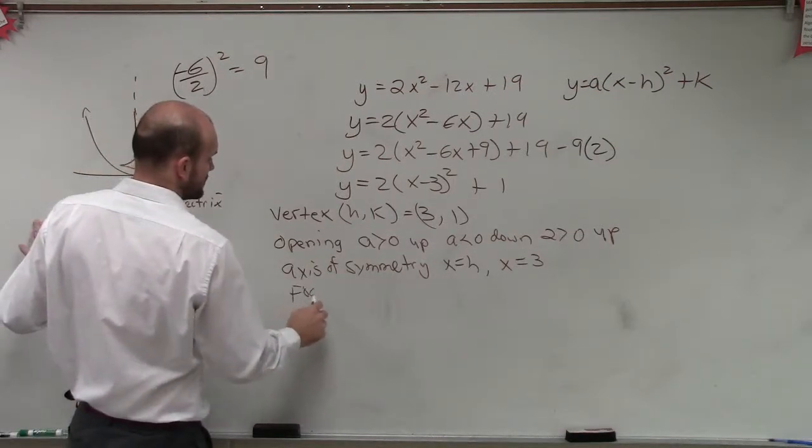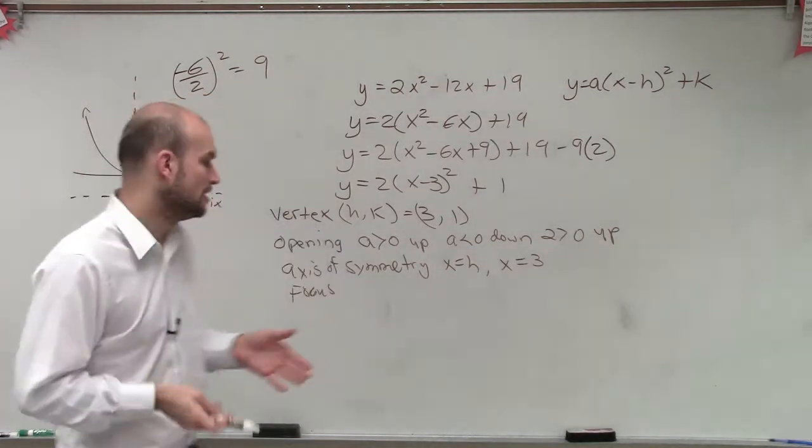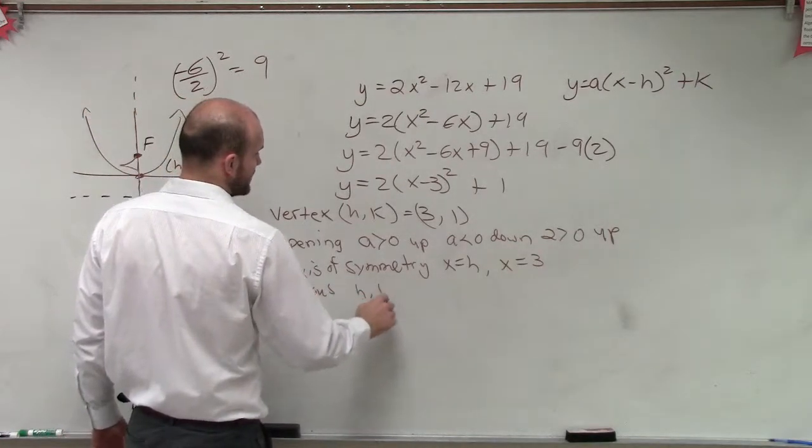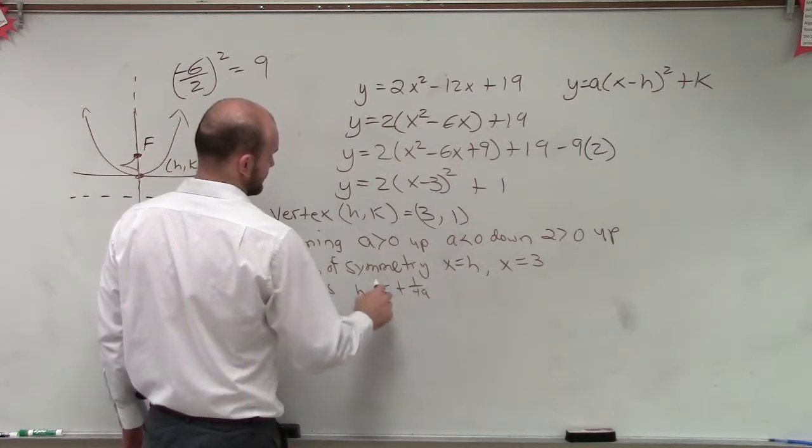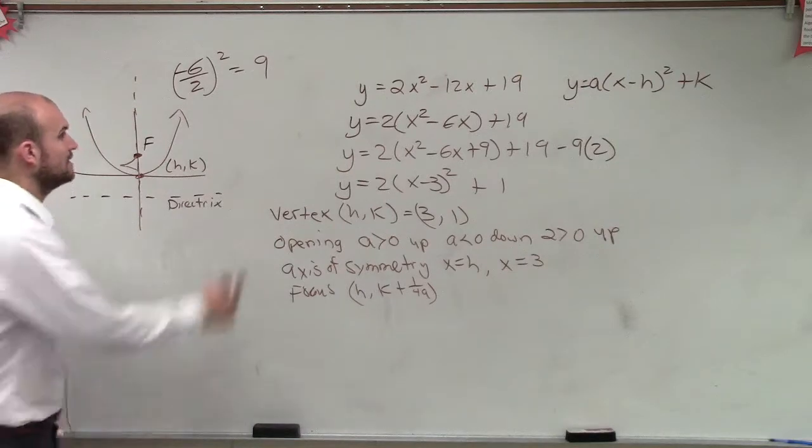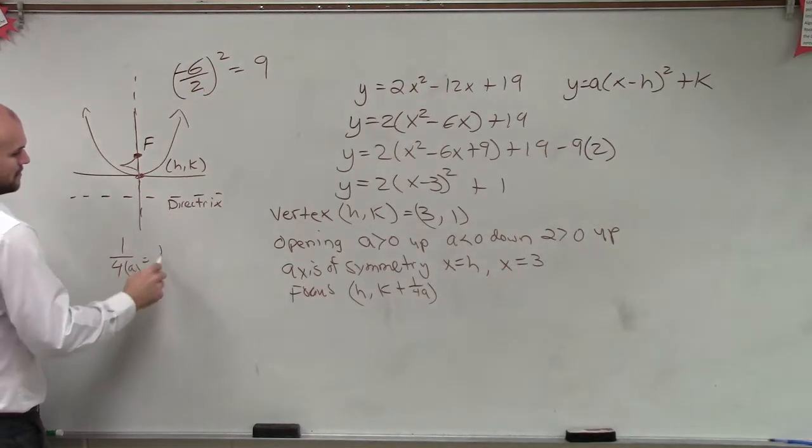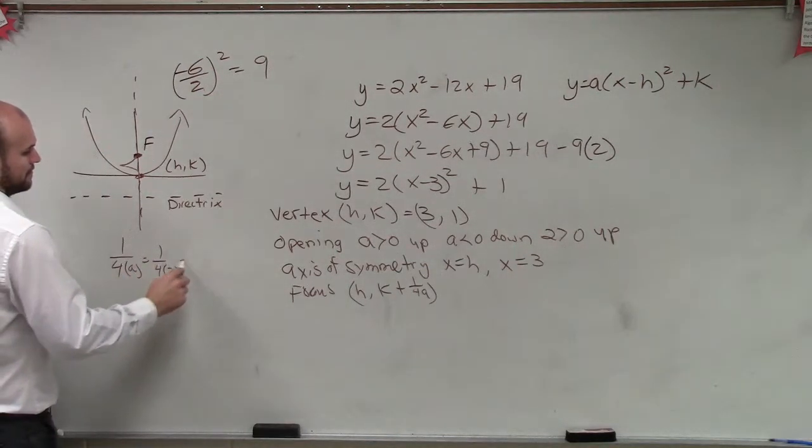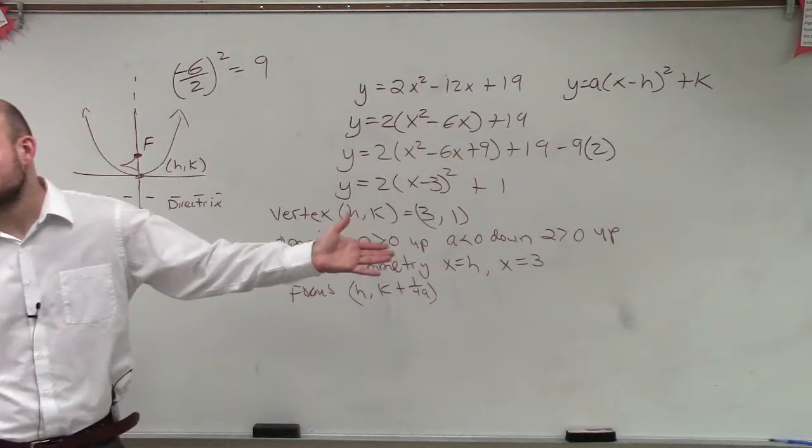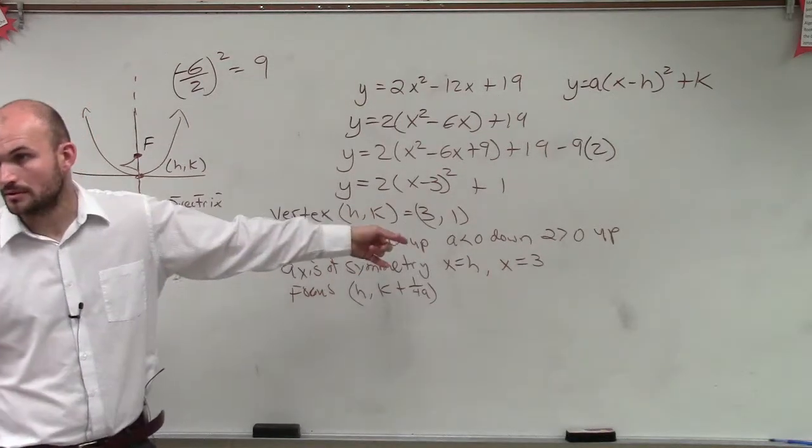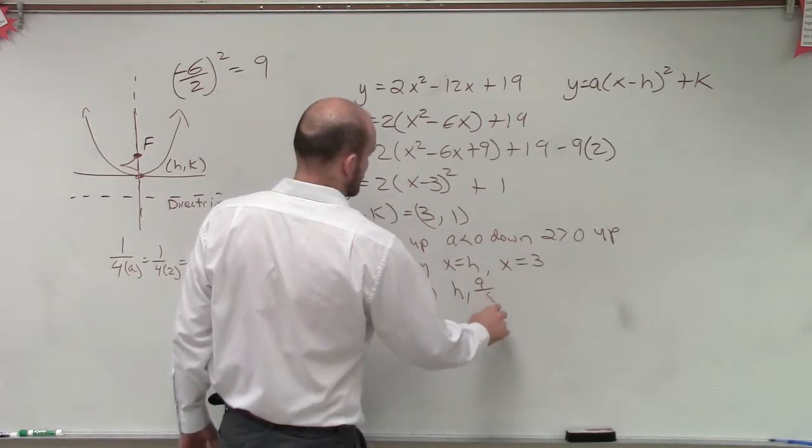So our focus, when we have a horizontal asymmetry, which is vertical, our focus is going to be h comma k plus 1 over 4a. Well, we know 1 over 4a, our a is 2, equals 1 over 8, right? So we say 1 plus 1 eighth, 1 plus 1 eighth, which would be 9 eighths.